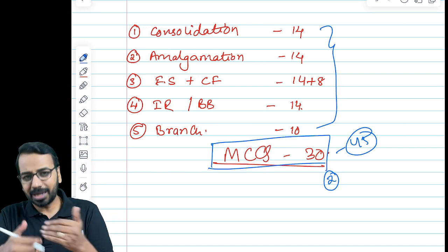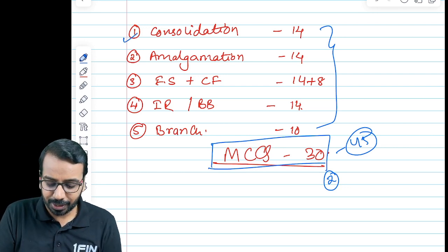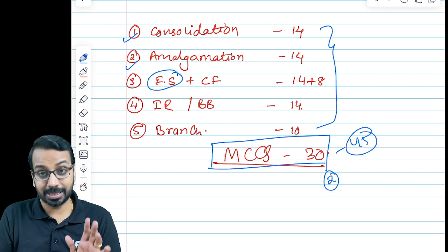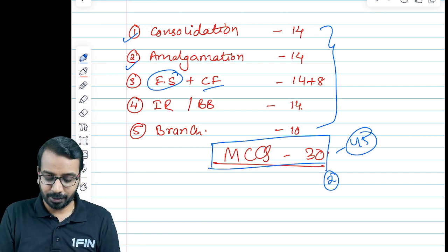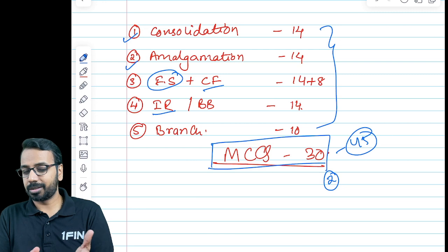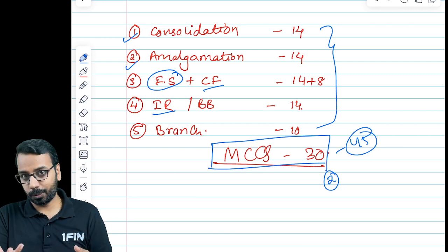Typically we have seen you get a question on consolidation, amalgamation, financial statements, the P&L and balance sheet, cash flow statement, then sometimes on internal reconstruction, a small question, sometimes we get a longer question also, buyback, and branch accounting.